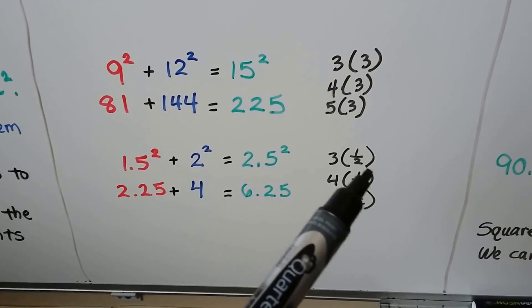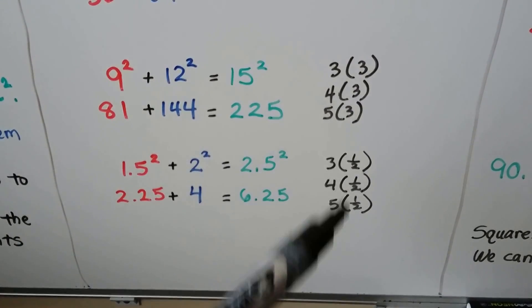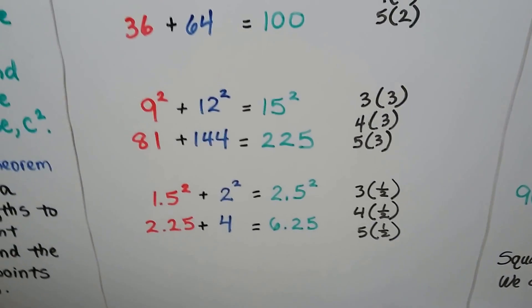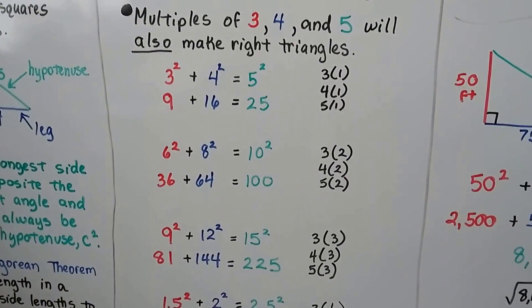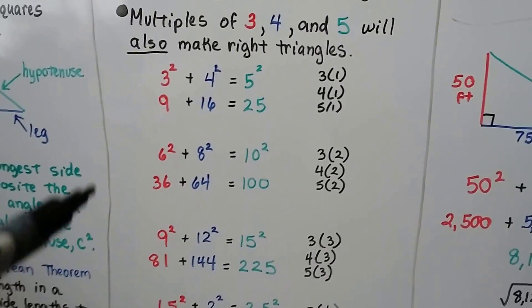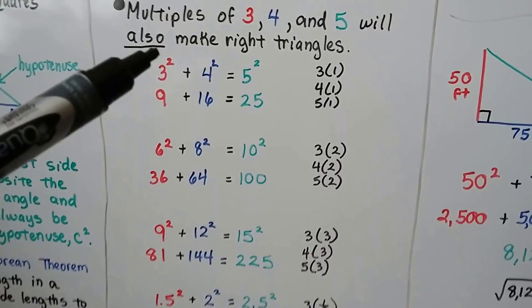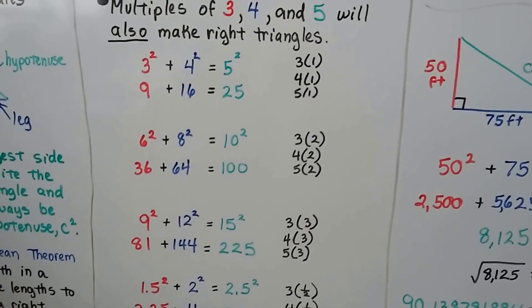We could even use a fourth or an eighth times these three numbers. So, look for multiples of 3, 4, and 5 if you're trying to identify right triangles. And if they are multiples of 3, 4, and 5, then you know, yeah, it's a right triangle.